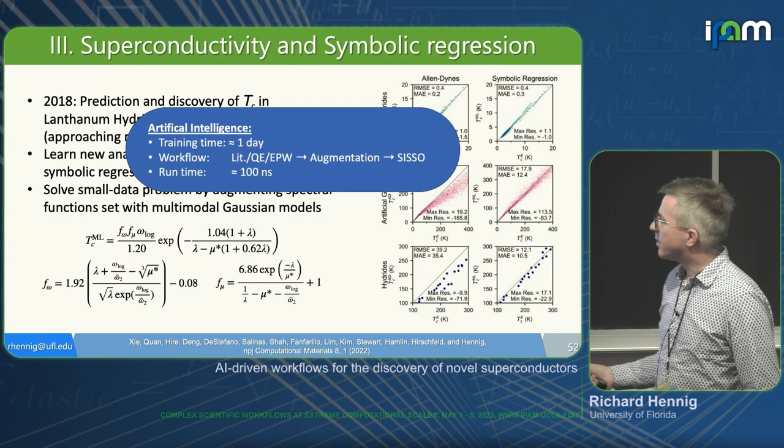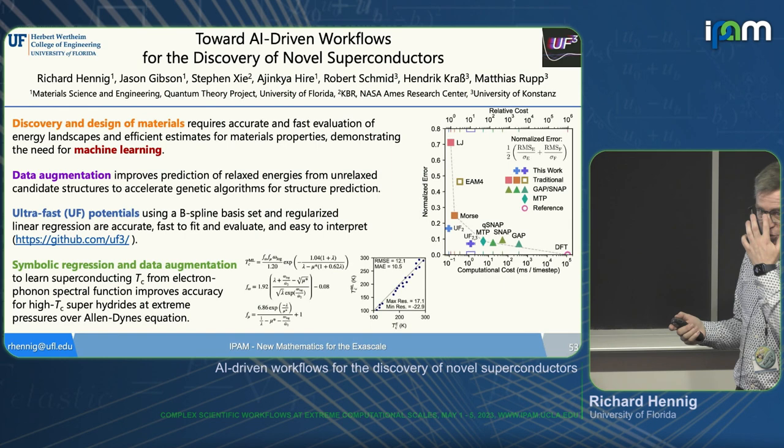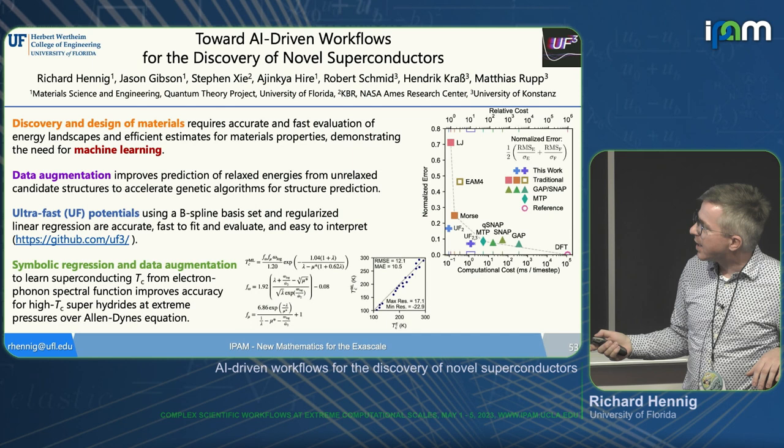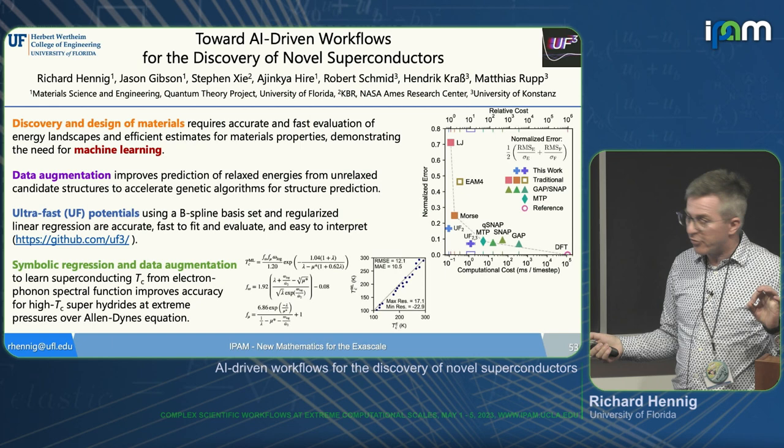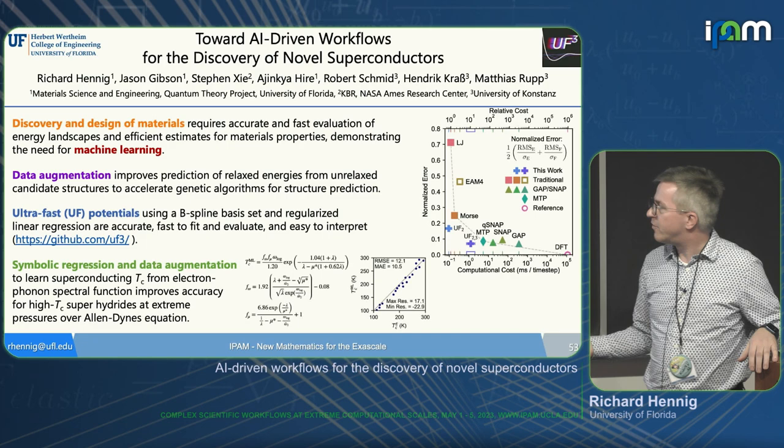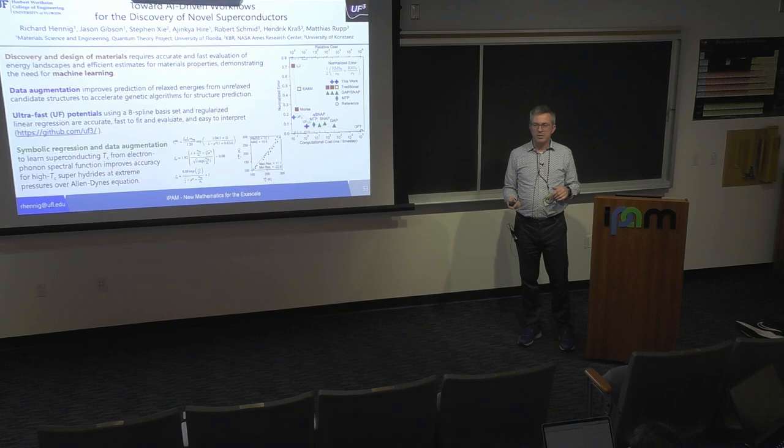To summarize: in our workflow, AI and machine learning and tools like PyIron can really help us accelerate materials discovery — through data augmentation to get the relaxed energy of unrelaxed structures, ultra-fast force fields to explore energy landscapes more efficiently, and symbolic regression to do property prediction more efficiently. Thank you very much for your attention.